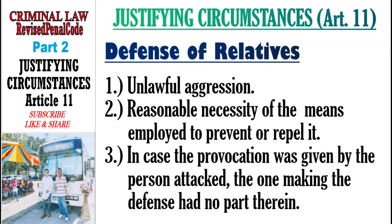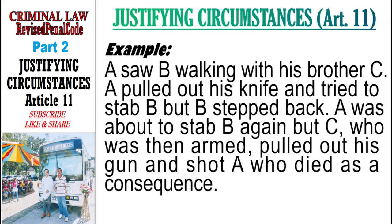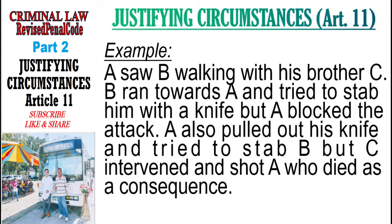Example: A saw B walking with his brother C. A pulled out his knife and tried to stab B, but B stepped back. A was about to stab B again but C, who was armed, pulled out his gun and shot A, who died. Here, there was unlawful aggression on the part of the attacker, and C merely defended his brother — this is defense of relative. In the second example, B ran towards A and tried to stab him, but A blocked the attack. A also pulled out his knife, and C intervened and shot A. Here, the unlawful aggressor was the brother, not the victim, so this cannot be defense of a relative because there is no unlawful aggression against the victim. Unlawful aggression is a condition sine qua non — without it, there is no defense.